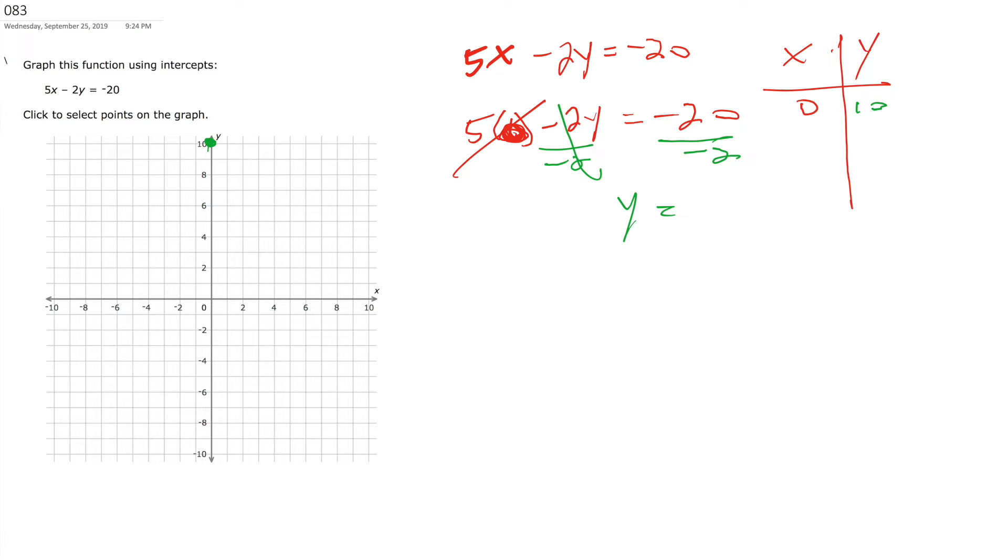Then you find the x-intercept, you plug in what for what? You plug in 0 for y. Yeah, so 5x minus 2 times 0 equals negative 20, and then 5x equals, that's gone, right? So negative 20 divided by 5, divided by 5, x equals negative 4.